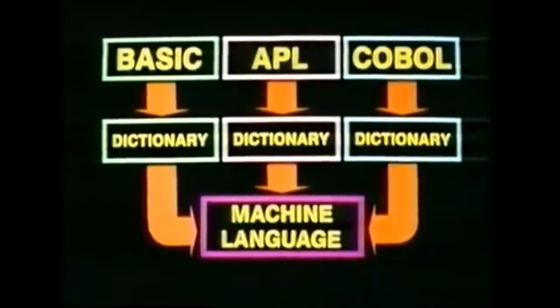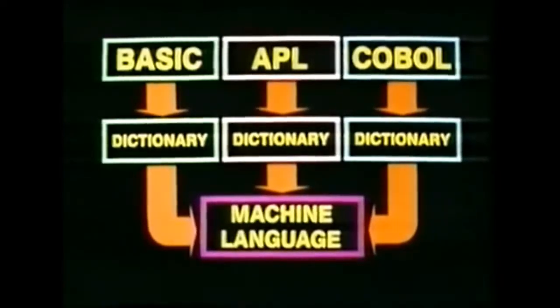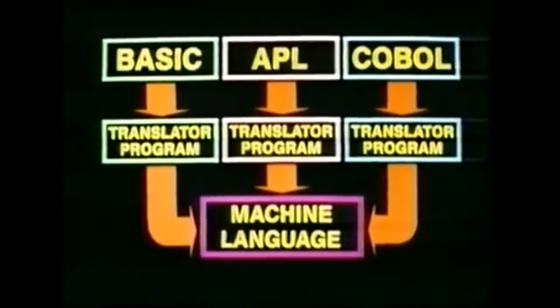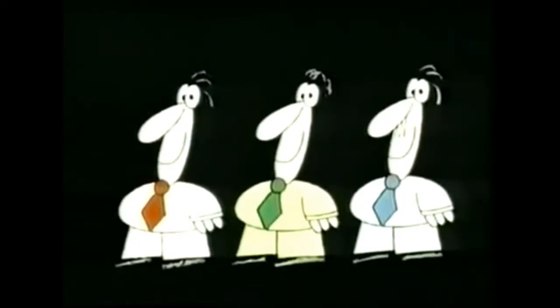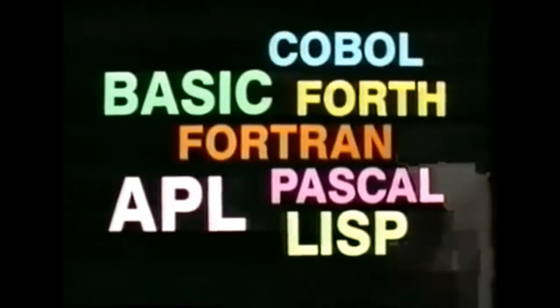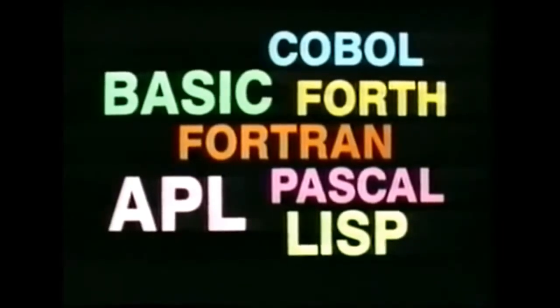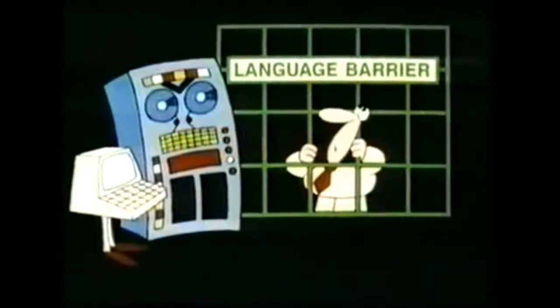These dictionaries, which automatically translated from a high-level program into a low-level machine language program, were in fact themselves programs — translator programs. And as soon as translator programs came into existence, people no longer had to speak machine language if they didn't want to. They could speak much more convenient languages, such as BASIC or APL or COBOL or FORTRAN or LISP or PASCAL or FORTH, or any of hundreds of other specialized high-level languages that have developed over the years. The language barrier between computers and humans had broken down.